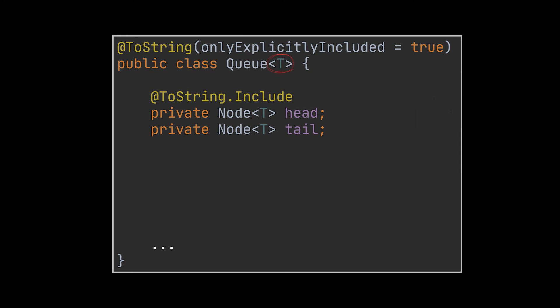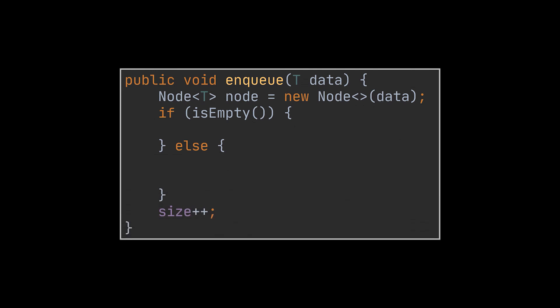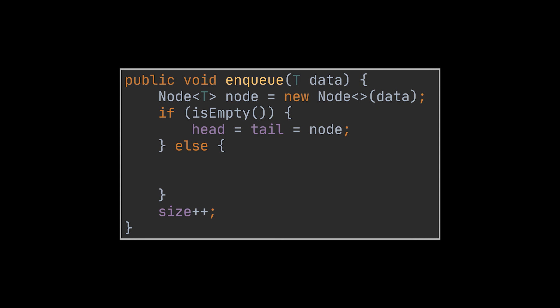Our queue class is also made as generic as possible. We have two nodes — one representing the head and another the tail — plus an integer to track the size. In the constructor, both head and tail can be initialized to null or left empty, since null is their default value. For the enqueue operation, we first wrap the given data in a node, then consider two cases: whether the queue is empty or not, followed by incrementing the size.